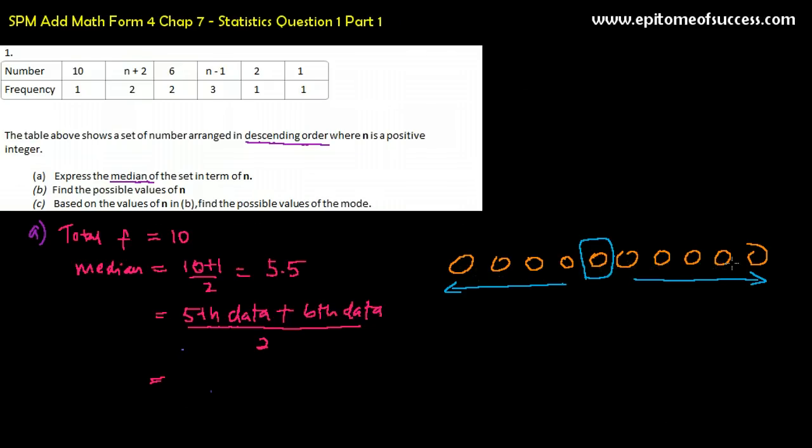So when there is even set of numbers, see this number, there's 10 numbers here. If it is even, you cannot just take 10 divided by 2 and get 5, and say 5 is in the middle. It is not even anymore. So you will have to add 1 to the set of data. So 11 divided by 2 is 5.5, because 5.5 tells you that the data is between 5 and 6. The 5th and the 6th data is here. This.